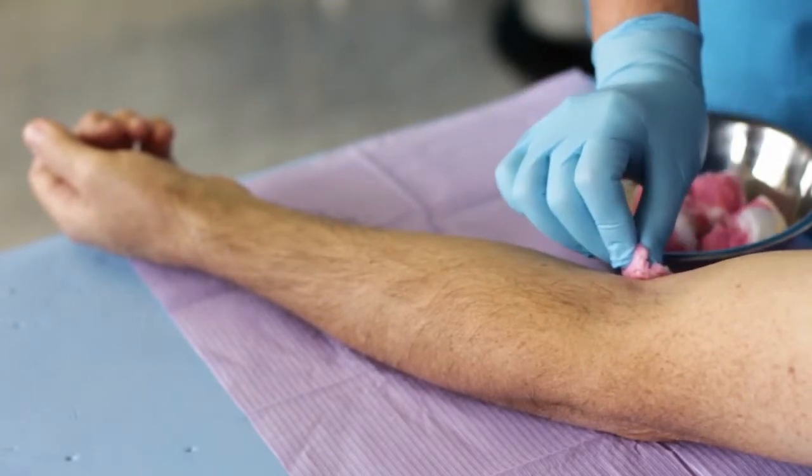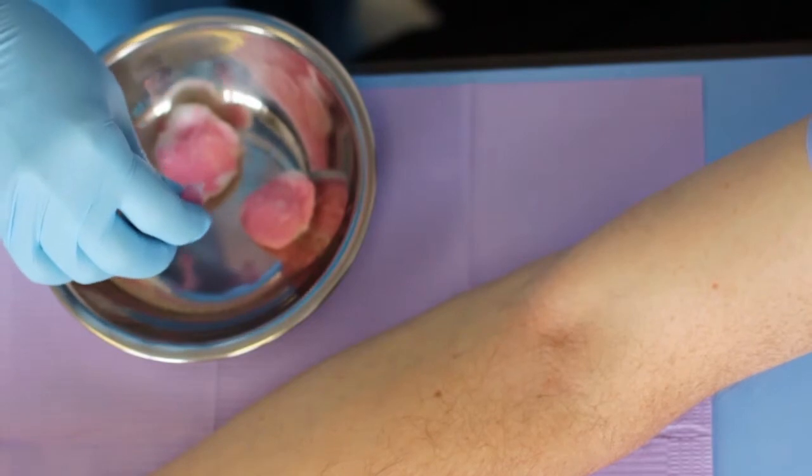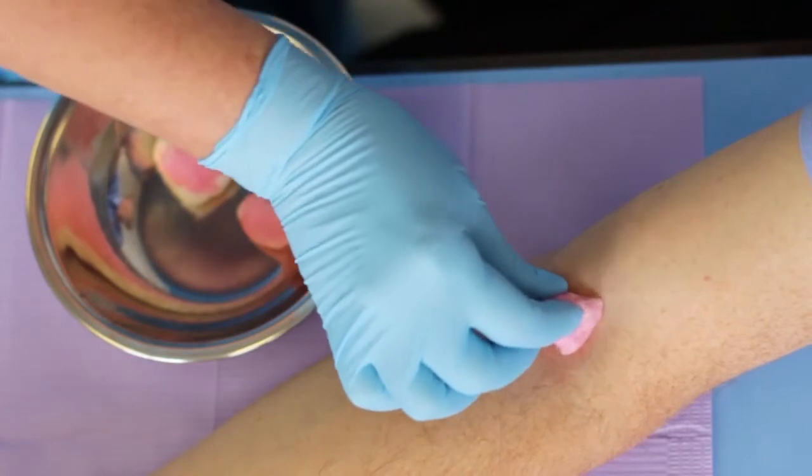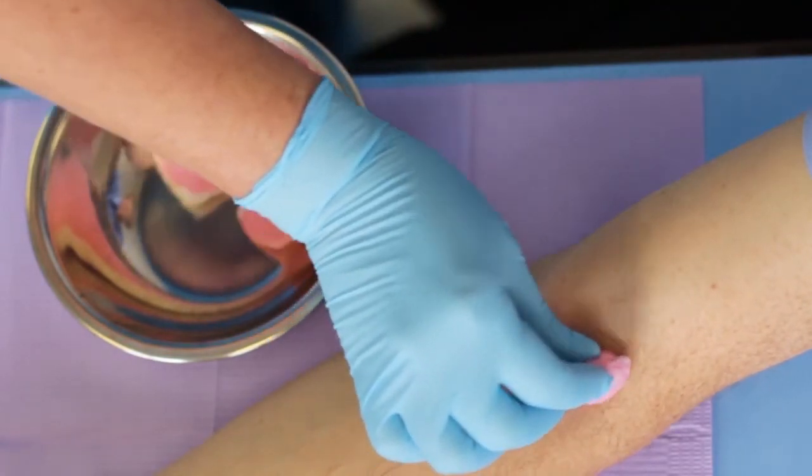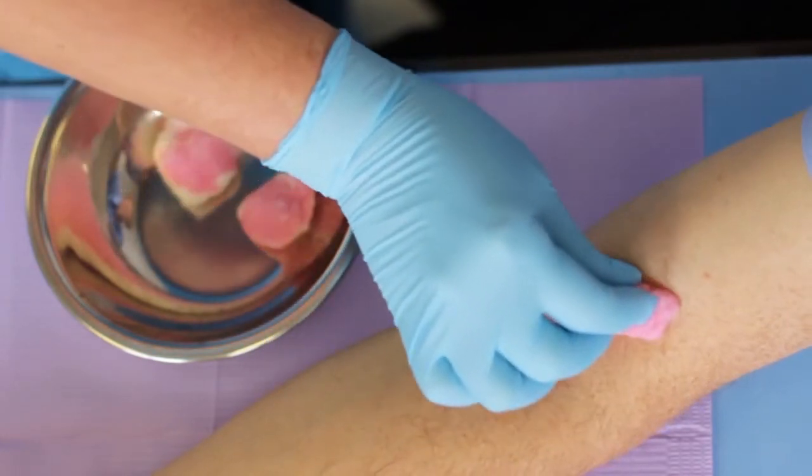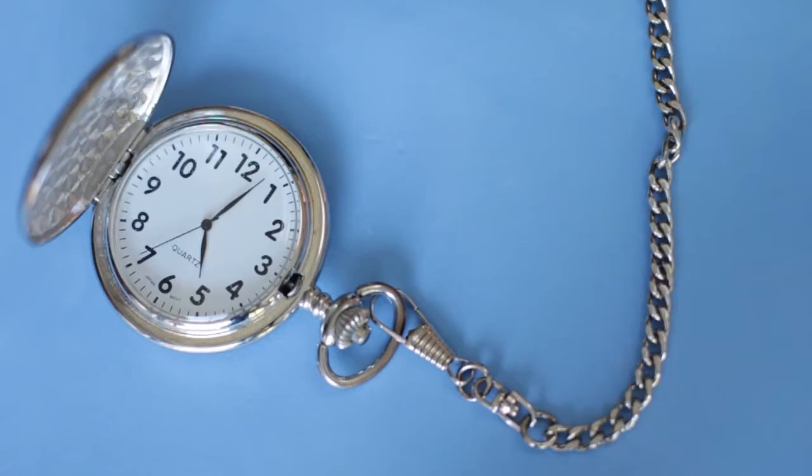Perform two to three scrubs using a fresh swab each time. For the last scrub, start at the intended puncture site and spiral out in a circular motion toward the periphery. Clean for a total of one to two minutes and then allow the site to dry for approximately 30 seconds.